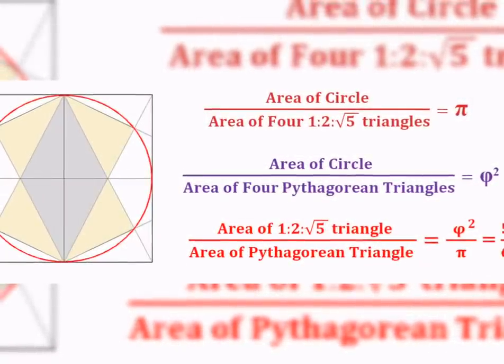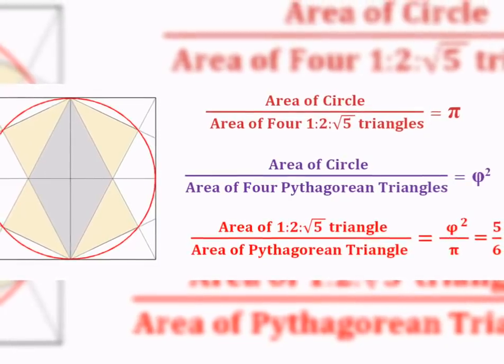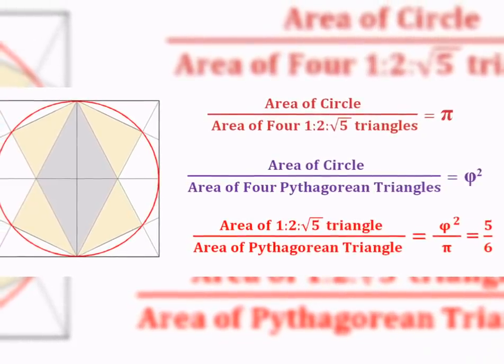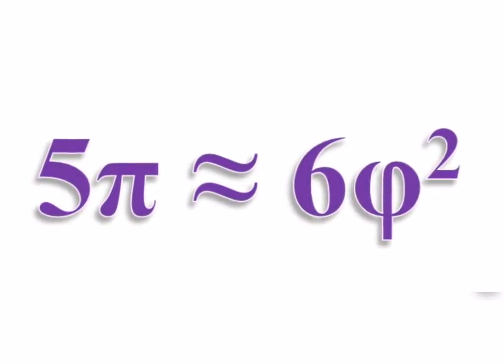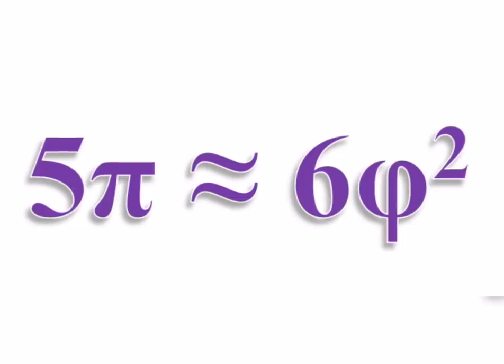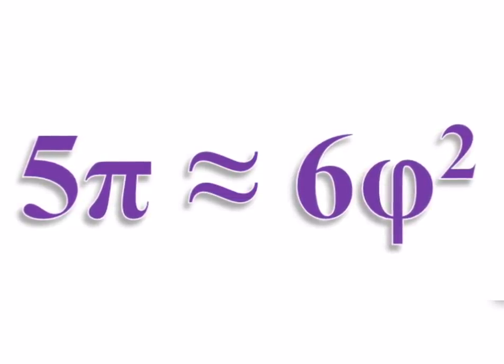The ratio between the area of two triangles equals the ratio between Pi and Phi squared. This general Pi-Phi correlation, given by the circumcircle, is impressively precise up to four decimal places.